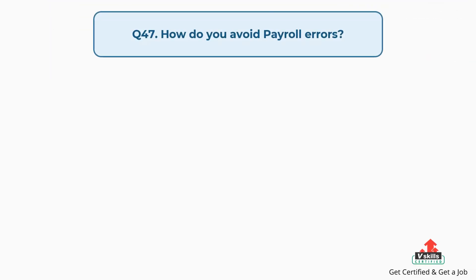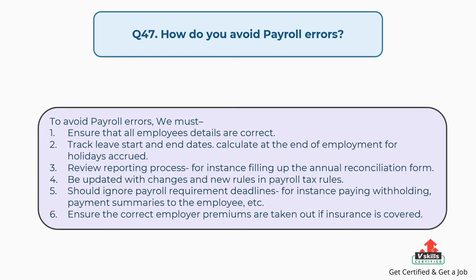Question number forty-seven: How do you avoid payroll errors? The answer is, to avoid payroll errors we must: ensure that all employees' details are correct, track leave start and end dates, calculate at the end of employment for holidays accrued, and review the reporting process — for instance, filling up the annual reconciliation form.